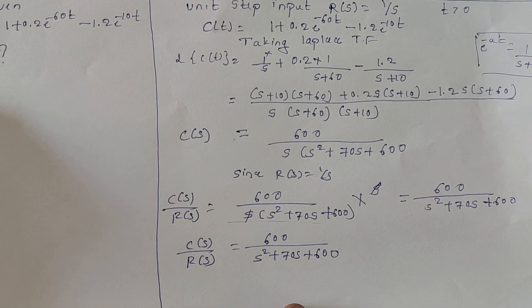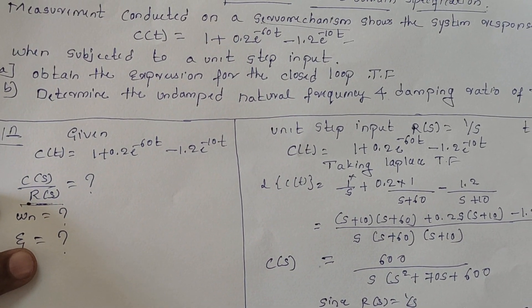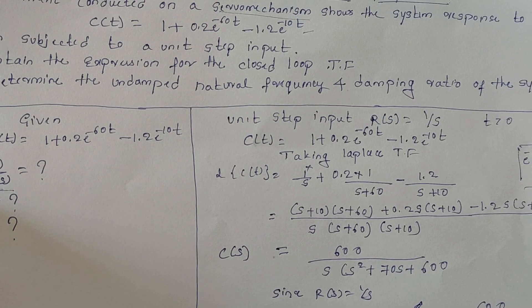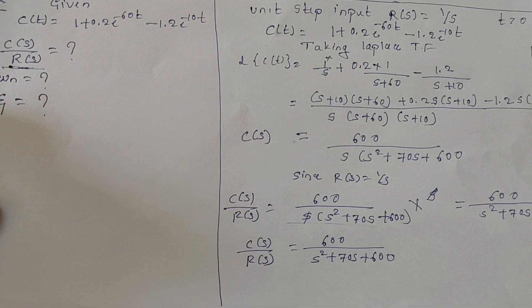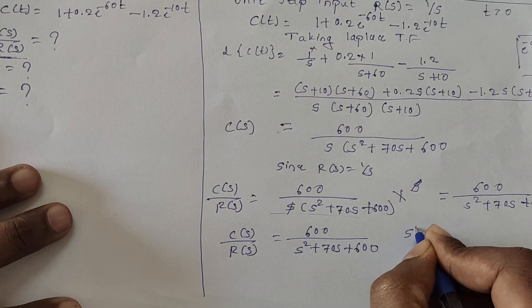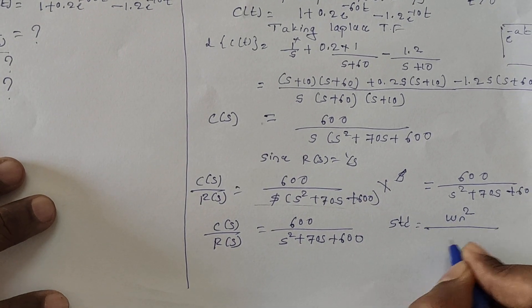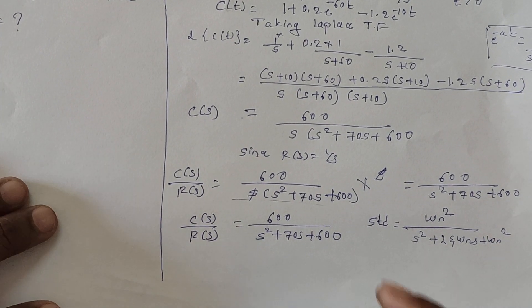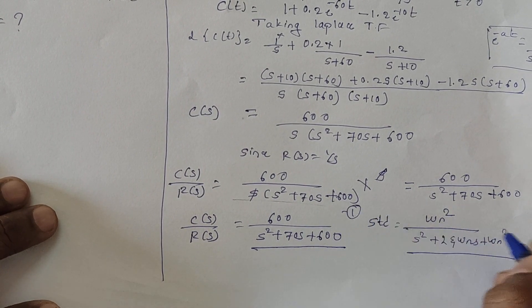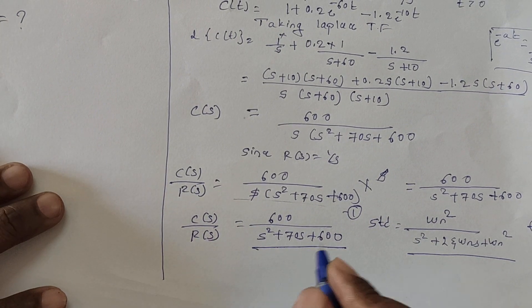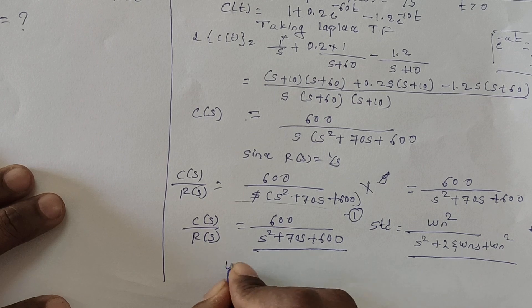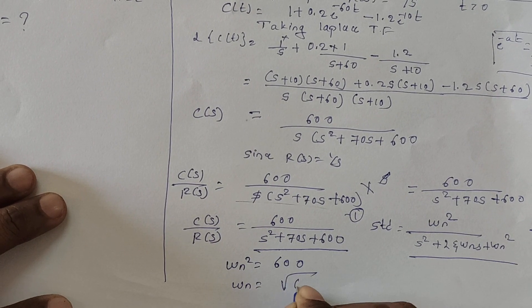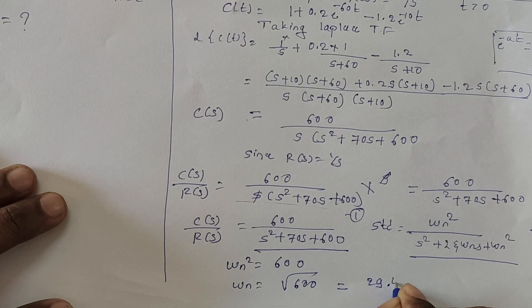We have solved the first question: the closed-loop transfer function is 600/(s² + 70s + 600). For the second question, we compare this with the standard second-order transfer function ωn² / (s² + 2ζωn·s + ωn²). Comparing numerators: ωn² = 600, so ωn = √600 = 24.49 radians per second.